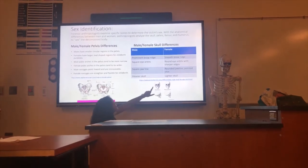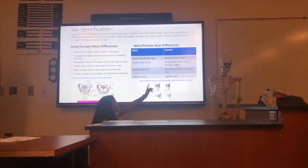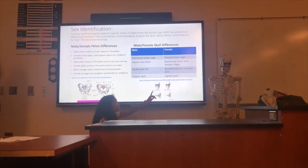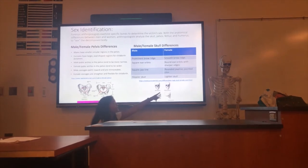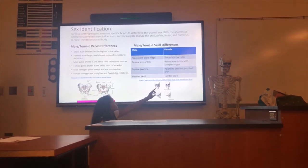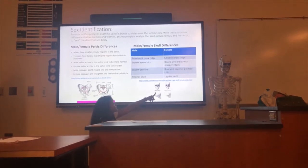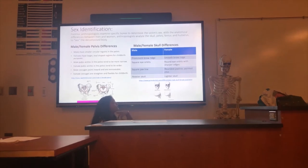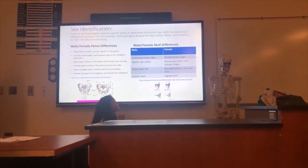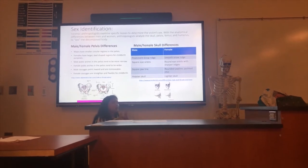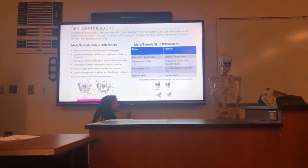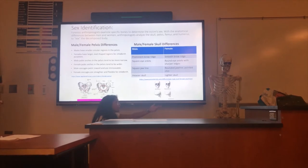As you can see here, males have a very prominent brow ridge — it points out and is very obvious. Female skulls do not have it; it's much more obscure. Males have square eye orbits, while females have rounder eye orbits. Males have a square jawline, while females have a very pointed and rounded jawline. Males also have a heavier, thicker skull, while women have a lighter skull.